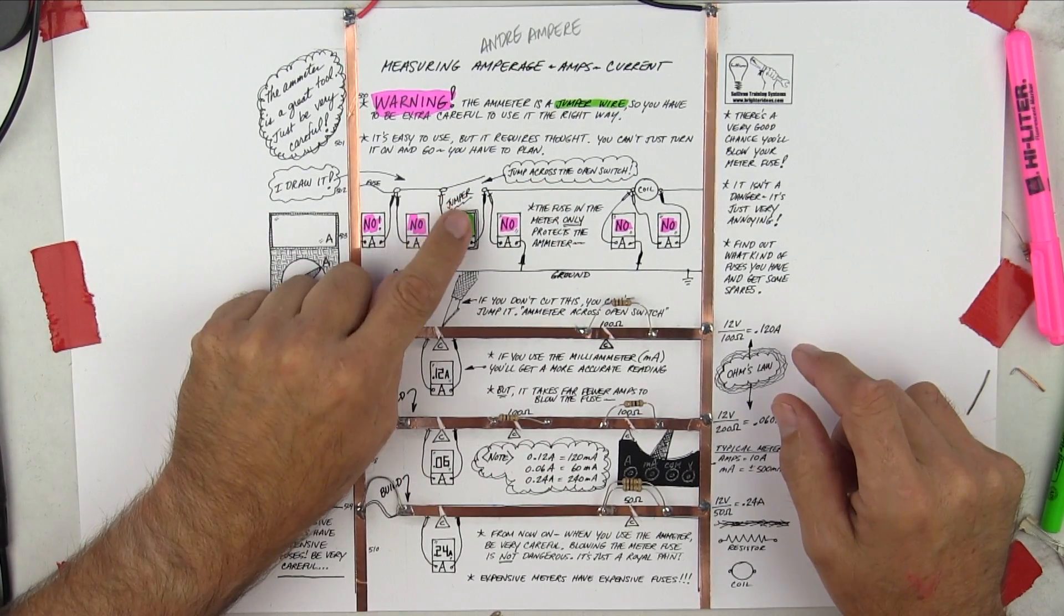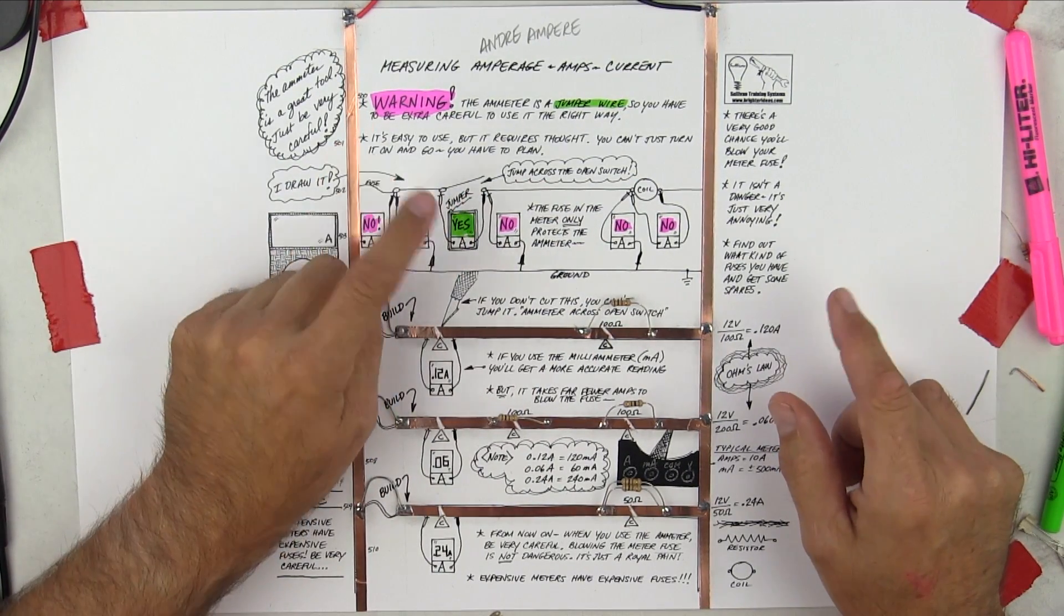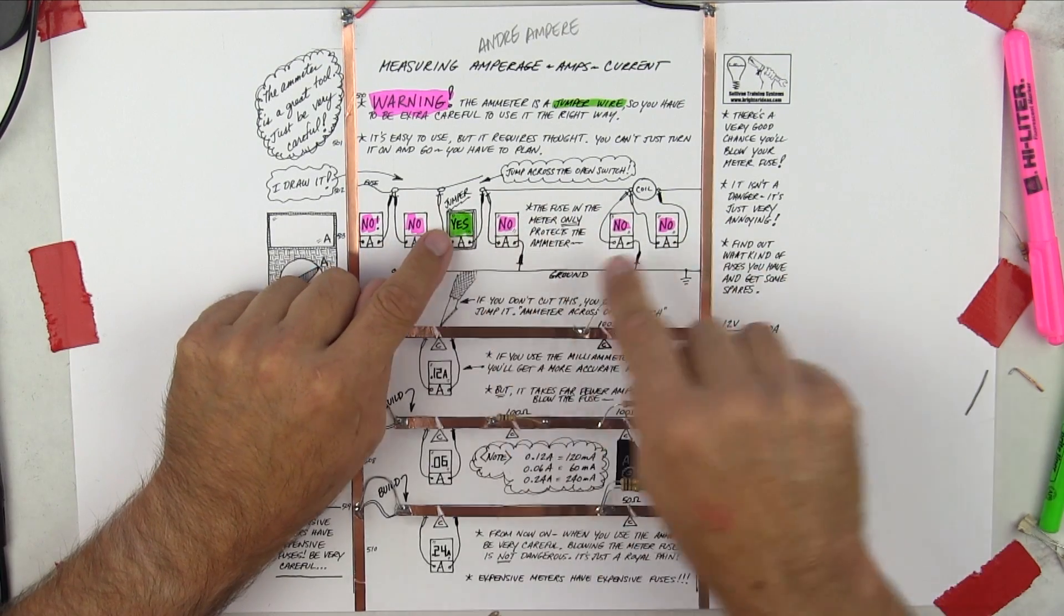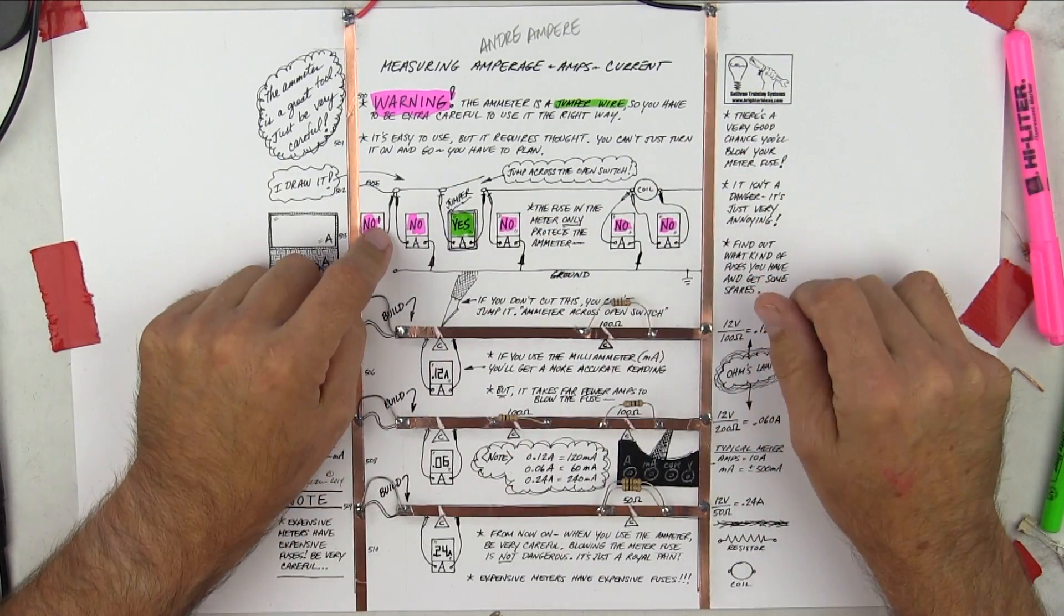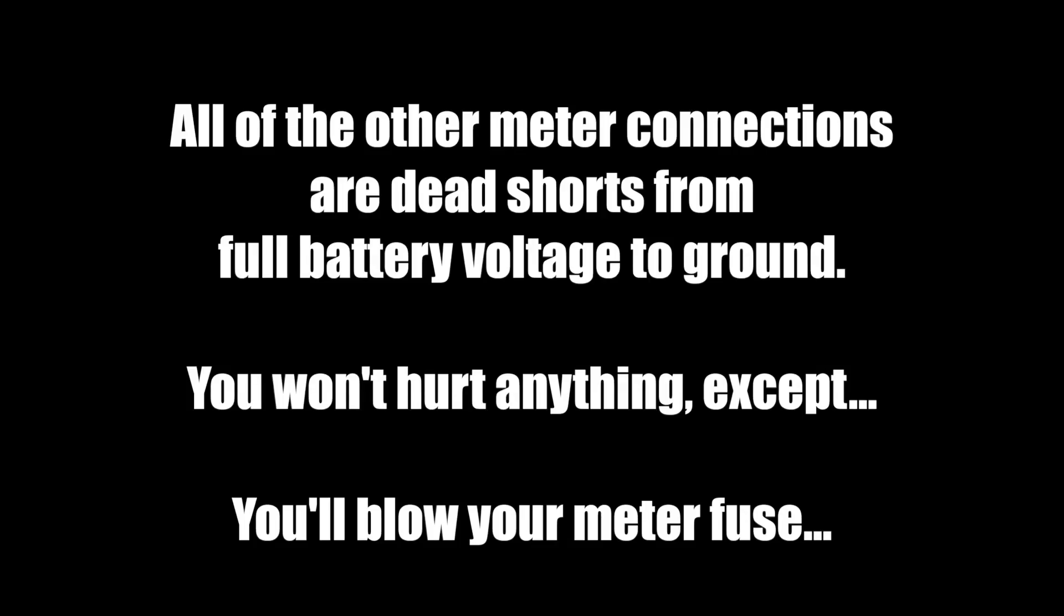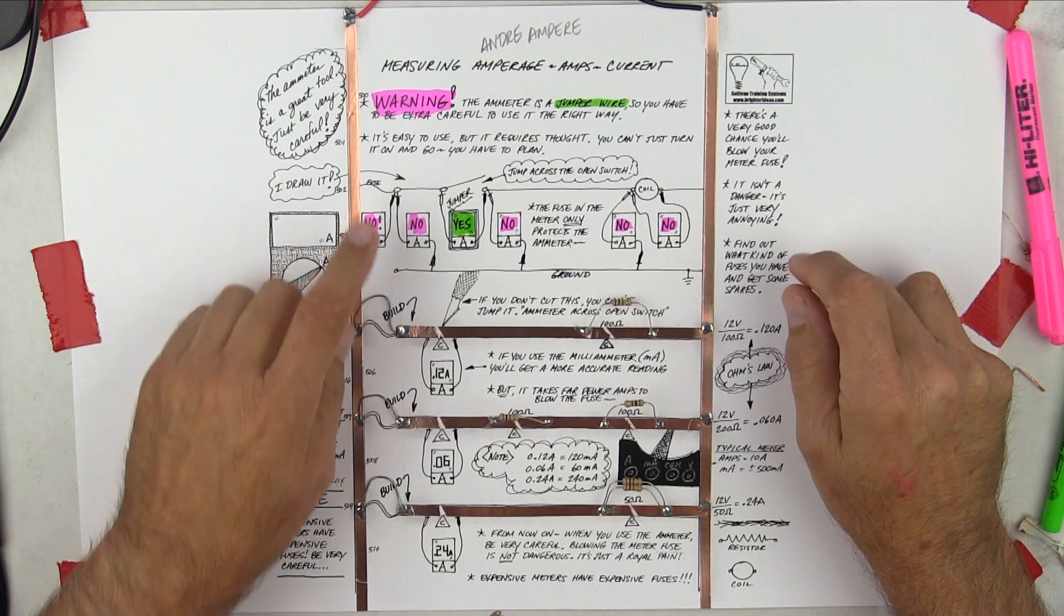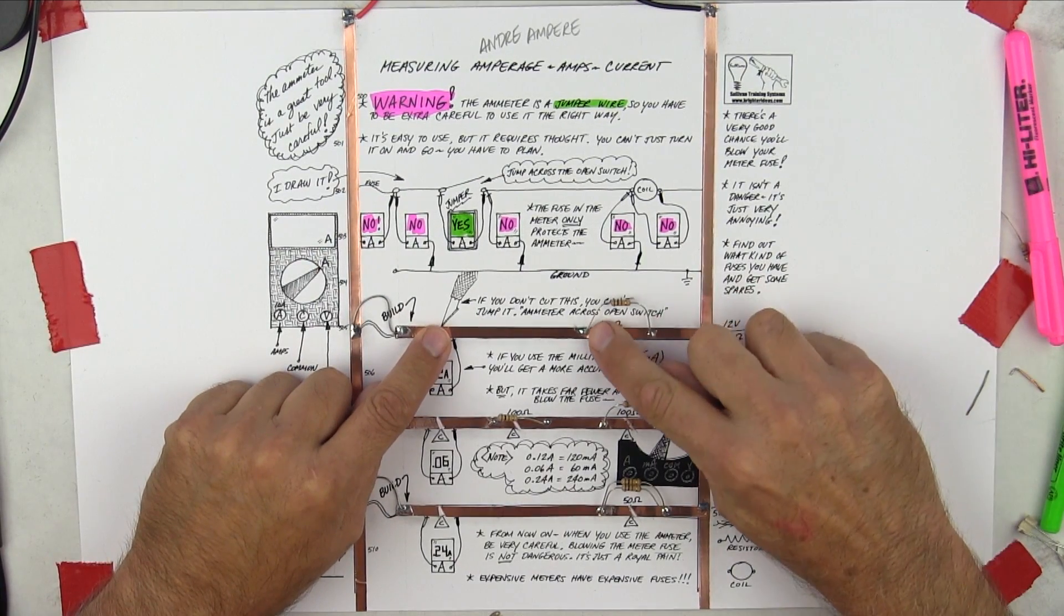So if you jump across the open switch, then you're going to turn the circuit on. So in this case, it's a coil, you jump across the switch, the coil turns on. Down here, we're just going to turn on resistors.